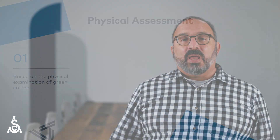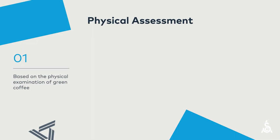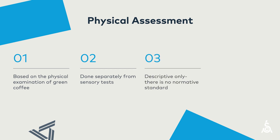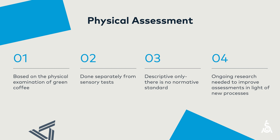In review, the physical assessment is based on the physical examination of green coffee. It's done separately from any sensory tests, and it is meant to document the physical properties of the coffee. The data collected in the physical assessment can be used to determine compliance with various standards that a country, company, or certification might require. SCA is aware that new coffee processes may require different approaches, particularly in the definition of physical defect, and is pursuing ongoing research in this area.